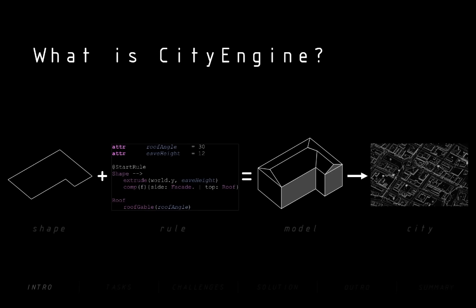What is CityEngine? CityEngine is a procedural modeling application dedicated to the creation of three-dimensional cities. The basic principle is relatively simple: with one shape and a so-called rule, a model is generated. If we repeat this process lots of times, we create a city. Examples of a shape can be a building footprint, a parcel or a street shape. The rule takes this shape as input geometry and processes it into the resulting model. Rules are already available for free download, or if you need specific rules, CityEngine service providers such as Urban can help out.